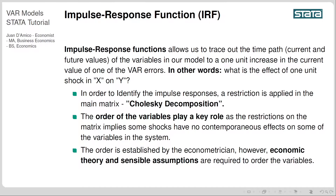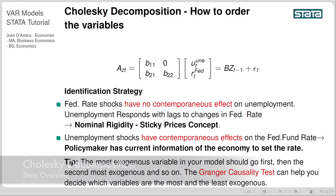In order to identify the impulse responses, a restriction is applied in the main matrix. Commonly this is the Cholesky decomposition, where the order of the variables plays a key role, as the restrictions on the matrix imply that some shocks have no contemporaneous effects on some of the variables in the system. The order is established by the econometrician; however, economic theory and sensible assumptions are required to order the variables.